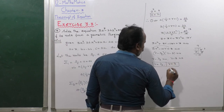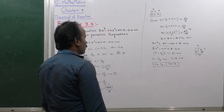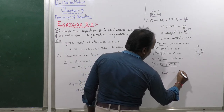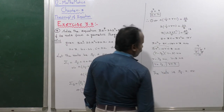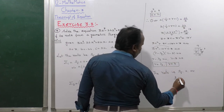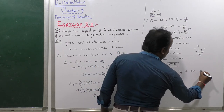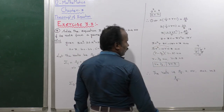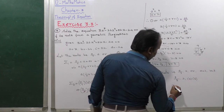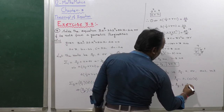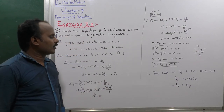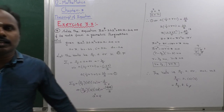So R equals 1 by 3 or R equals 3. Therefore the roots A by R, A, A·R with A equals 2: when R equals 3, the roots are 2 divided by 3, 2, and 6. When R equals 1 by 3 we get the same result. So the roots of the equation are 2 by 3, 2, and 6.